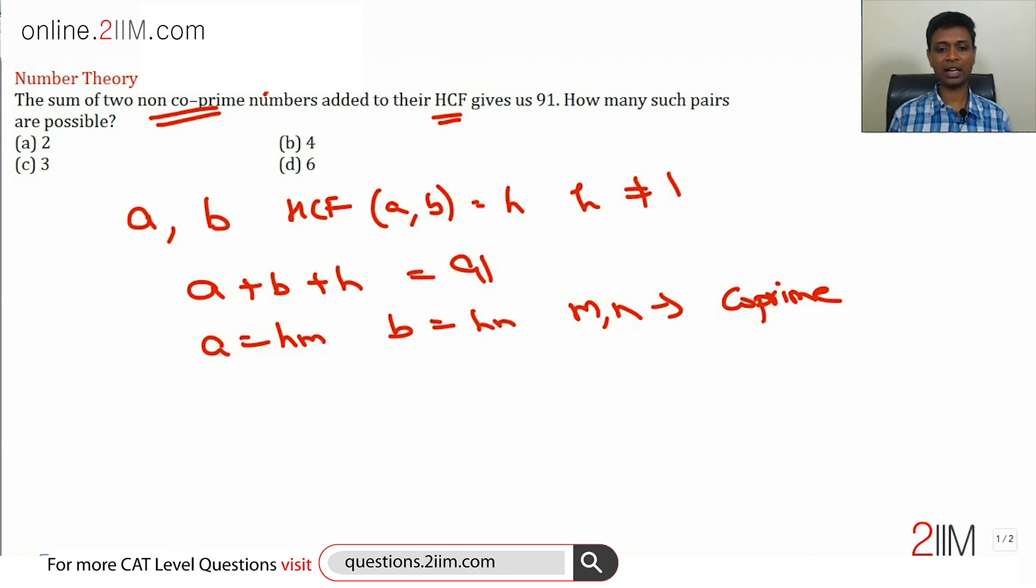So if I extract h out of a number, the highest common factor between two numbers, what I am left with, there cannot be anything in common. So let us write this down. a plus b plus h is 91 or h into m plus h into n plus h equals 91. This is a big breakthrough: h into 1 plus m plus n is 91.